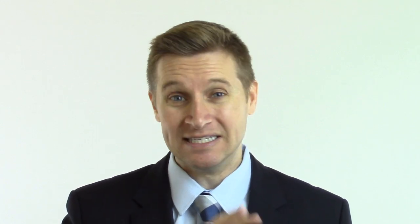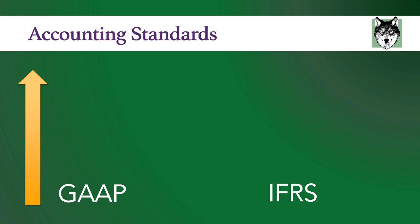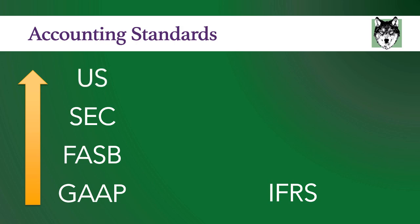You have to realize that the U.S. is giving up a lot here. Currently, GAAP is determined by the Financial Accounting Standards Board, or FASB, and controlled by the Securities and Exchange Commission, the SEC. The SEC is part of the U.S. government that regulates financial markets in the United States. In the convergence of GAAP to IFRS, the SEC is giving up control to an international organization.